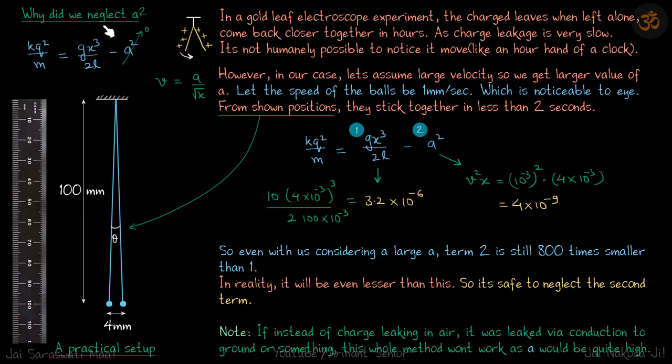Now let us see why we neglected a square. This is the equation which we got from where we neglected a square to get our answer and then differentiated to get our answer.